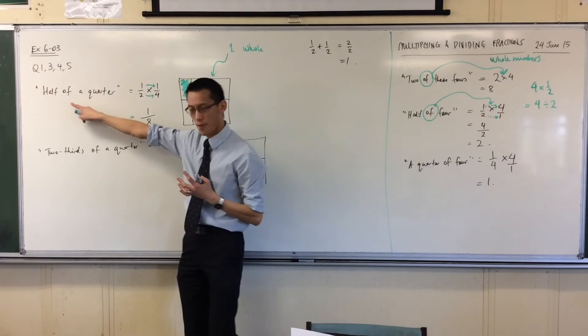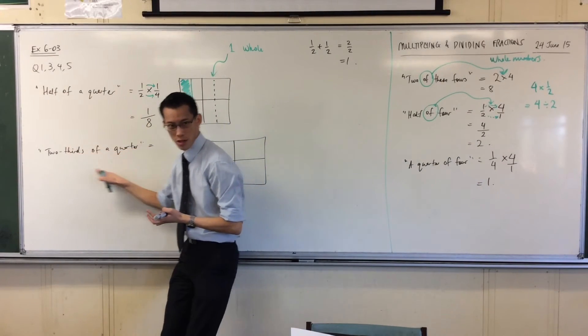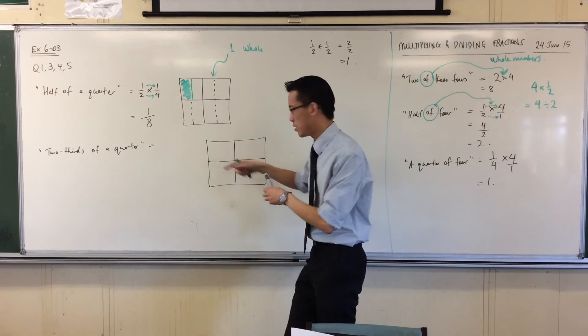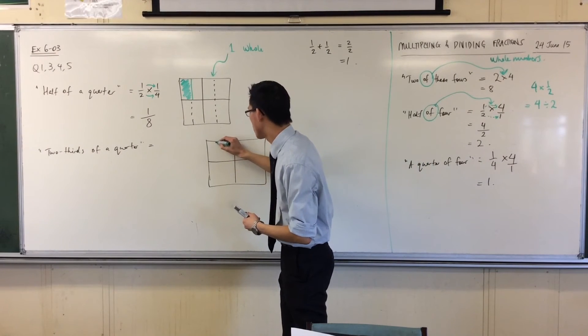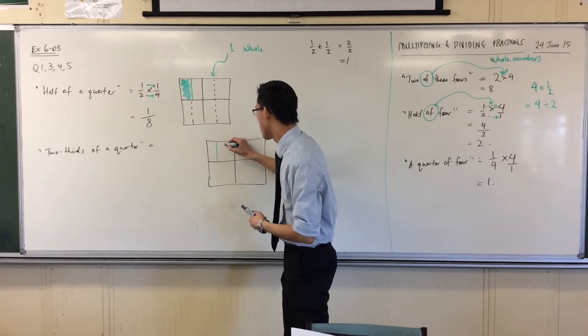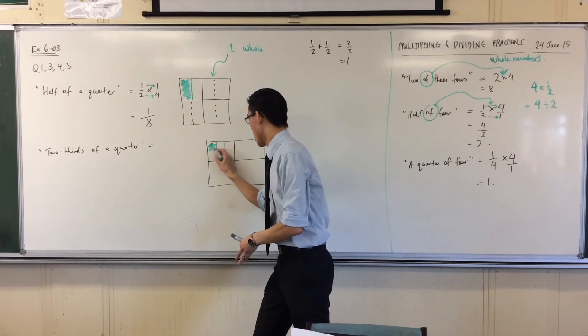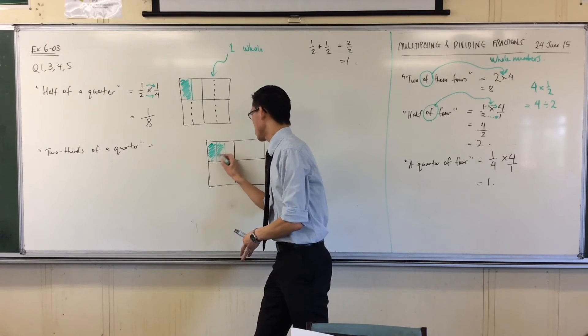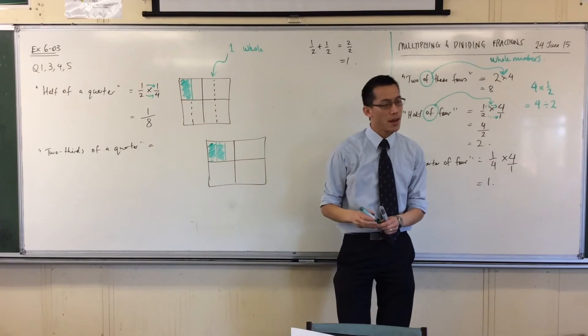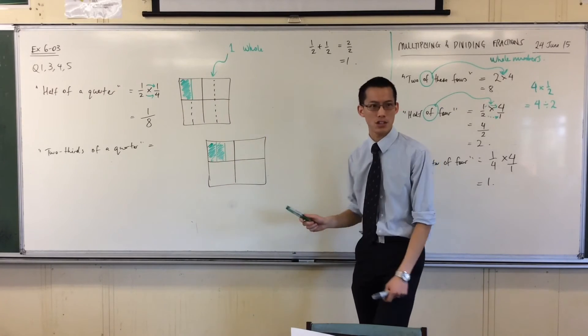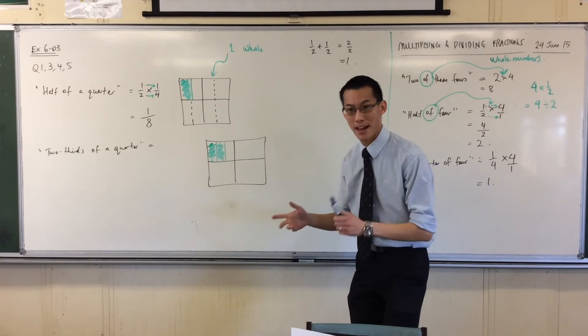You've got your quarters there. You're going to start with that. Now, if I want not half a quarter, but two thirds of a quarter, you look at, say, one of them, and you say, well, I want two thirds of this shape. So if I divide it up into thirds, like that, I want two of those, right? There's one, and there's two.